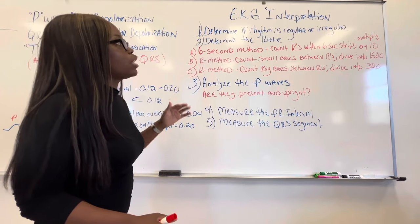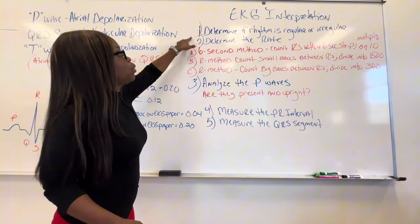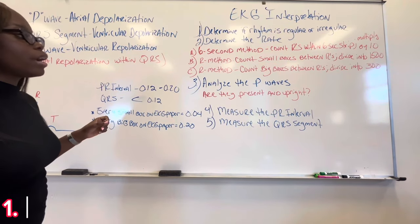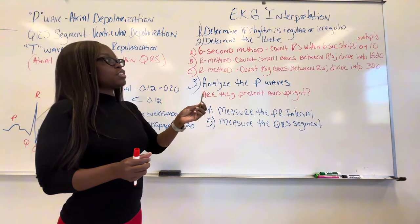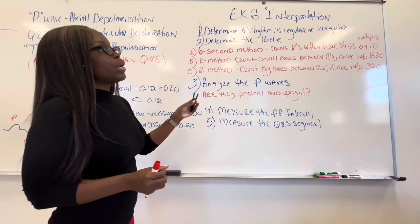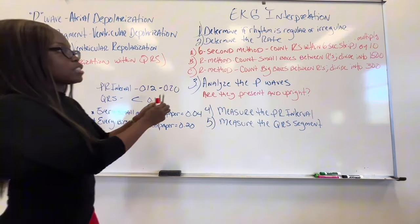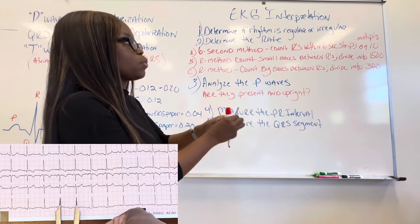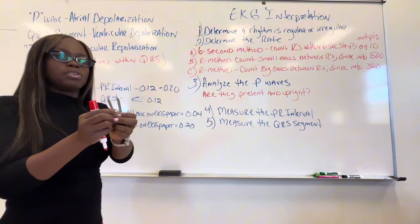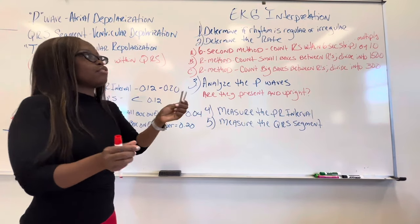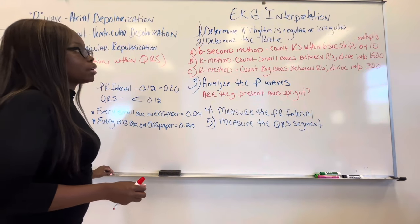Okay, so let's talk about interpreting the EKG. Now, there are five steps to interpreting the EKG. The very first thing we want to do is determine whether the rhythm is regular or irregular. And you can do that by using this caliper here. You want to just determine that the distance between each R in the QRS segment, that there's an equal amount of space in between each one. So you can count the boxes in between each R. You want to look at the rhythm to see if it's regular or irregular.